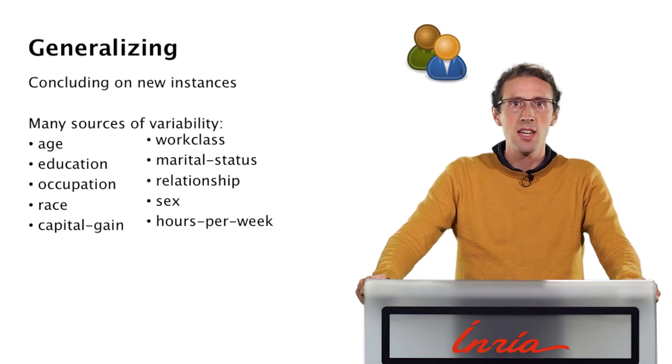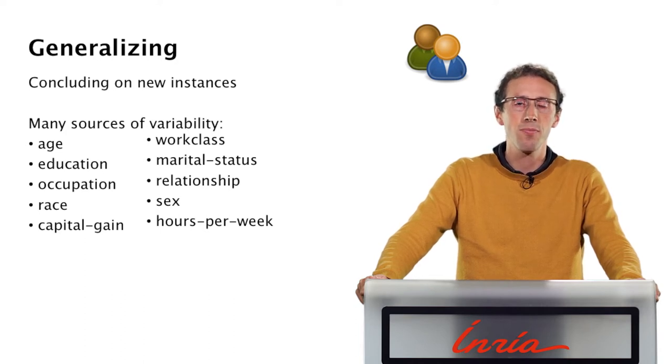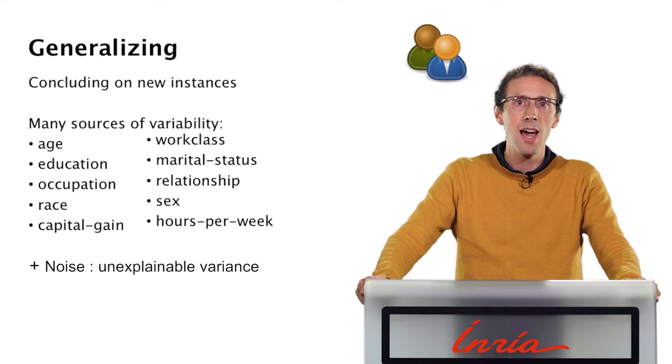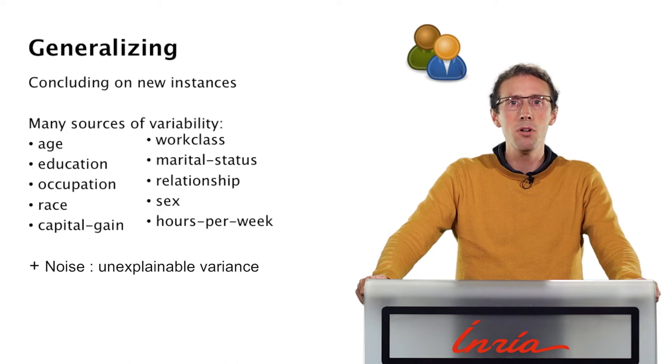The challenge is that there are many ways an individual can vary, even within the limited description given by our data. An additional difficulty is the noise in the data. By noise, we mean the aspects that cannot be explained solely from the data. For instance, an individual's income may have been influenced by the mood of his manager during his annual review, which is not in our database.